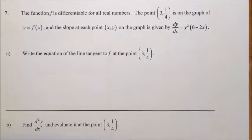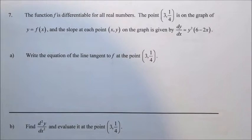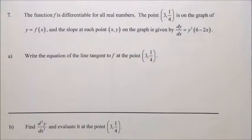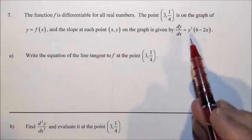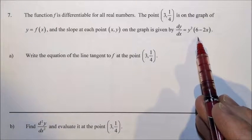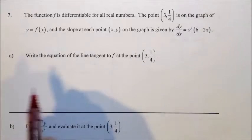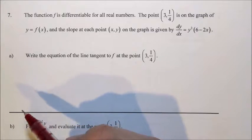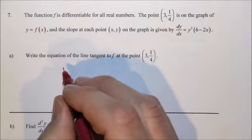On to the other side. At the top, function f is differentiable for all real numbers. The point (3, 1/4) is on the graph of y equals f of x. That's our initial condition. And the slope is given by dy/dx is y squared times 6 minus 2x. Step one, or part A, write the equation of the line tangent to f at this point.